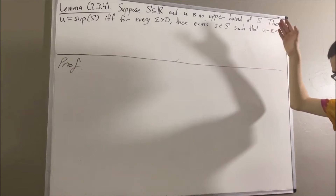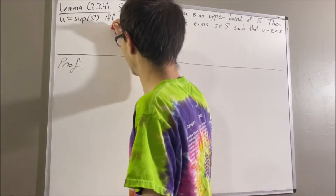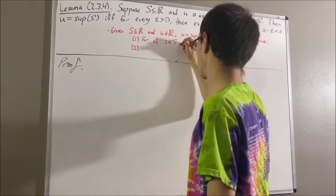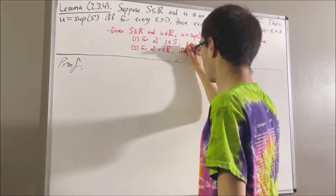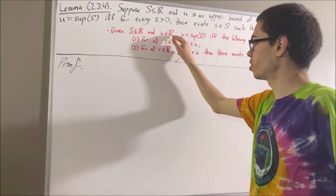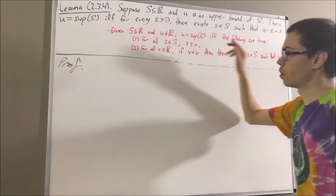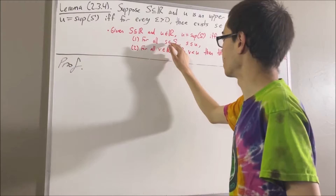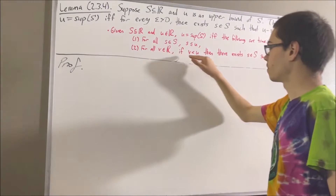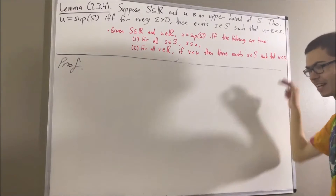Now in proving this lemma, we are going to rely on another lemma which says the following. Given s is a subset of real numbers and u is a real number, then u is the supremum of s if and only if the following are true. One: for all s in S, s is less than or equal to u. And two: for all real numbers v, if v is less than u, then there exists an element s in S such that v is less than s.